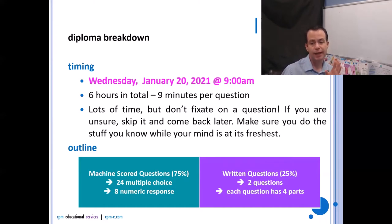Your exam will be broken into kind of two parts: the machine scored part and the written part. The machine scored part is worth 75% of your mark, and in there you'll see 24 multiple choice and eight numeric response. Then the written questions will be worth 25% of your mark, and in there you'll have two questions, and each question will have four sections to them, and usually they're connected to some sort of common storyline or common thread of some sort. It doesn't mean they'll all be in the same unit or anything like that, but there'll be some sort of overarching theme to one question and then there'll be four little questions in that theme.